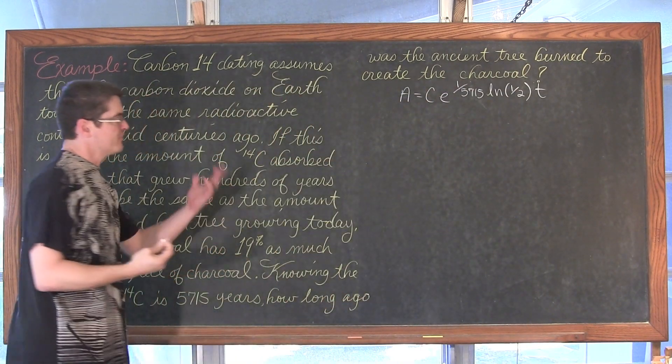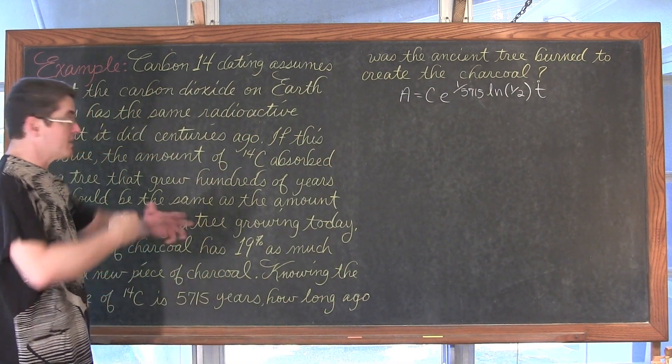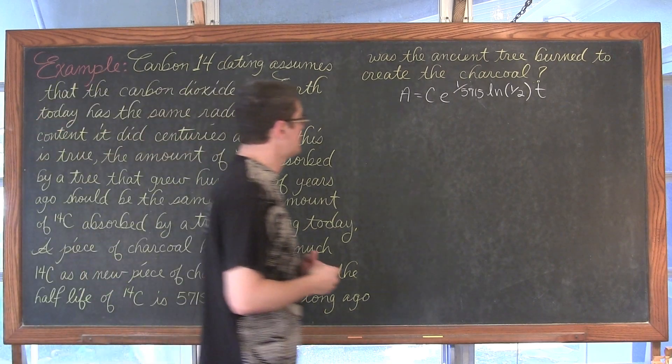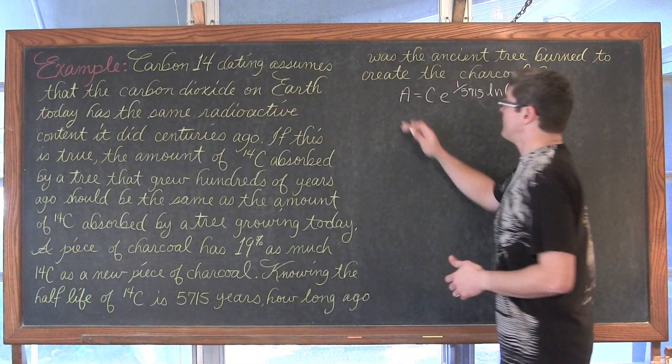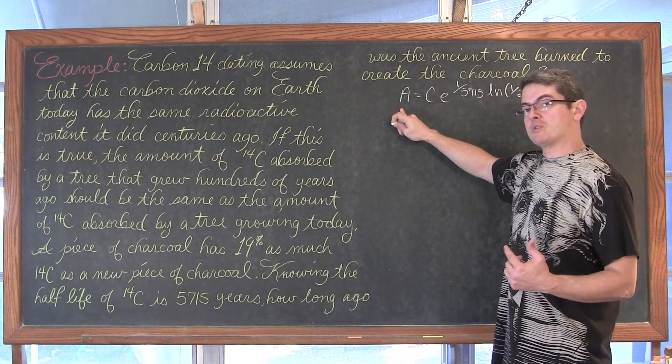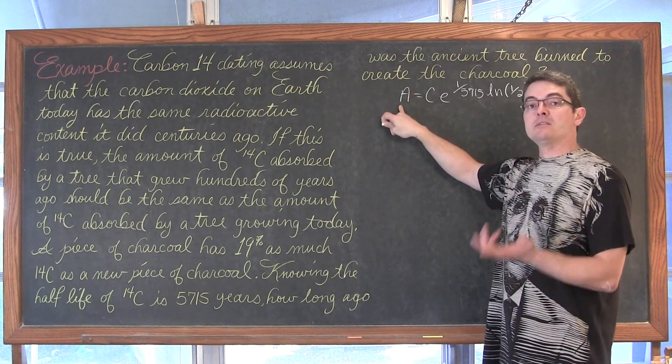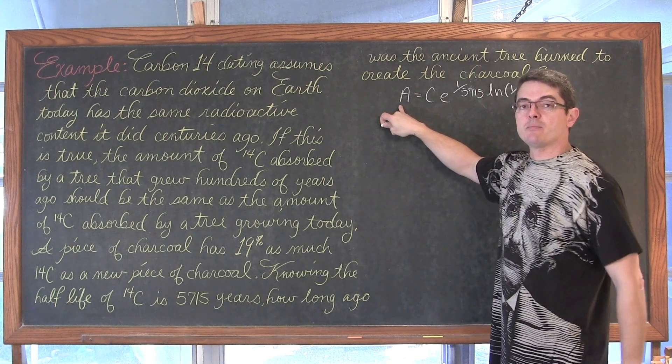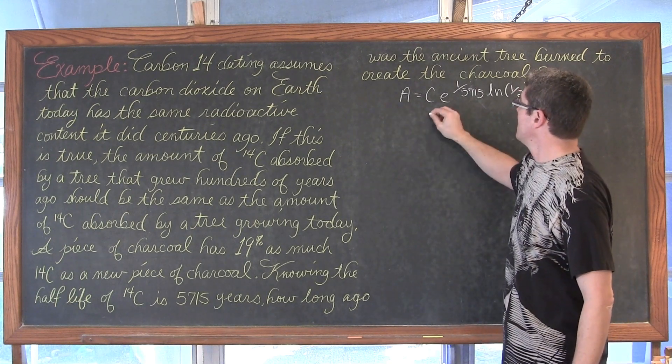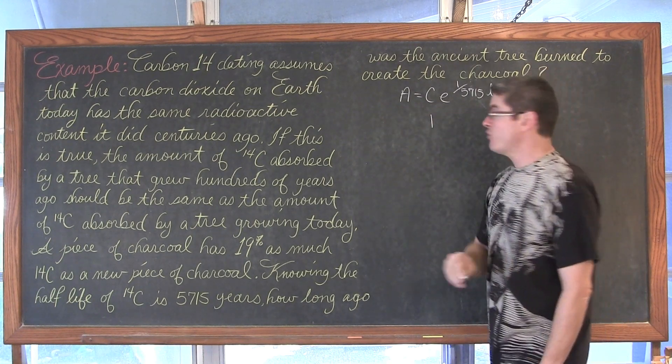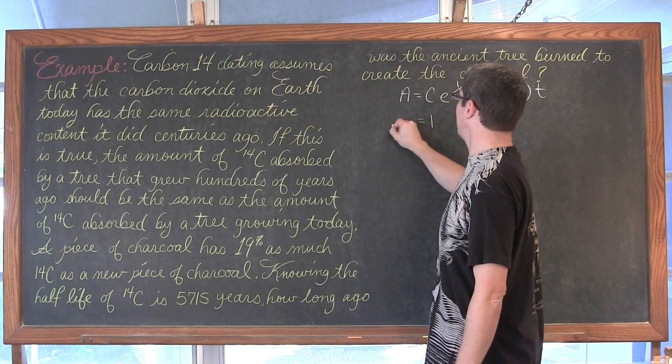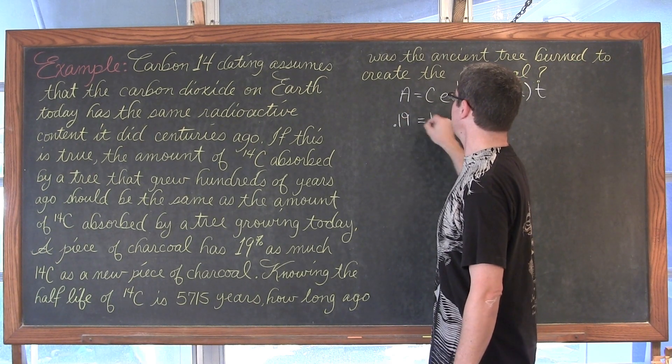Okay, I have a lot of information here. I know we're looking for t. How old is this piece of charcoal? Our final amount is 19% of what we started with. I could let our initial amount be 100 and have 19, which would add an extra step of dividing both sides by 100. Or I could start with an initial amount of 1 and say my final amount is 0.19 units of this carbon-14.